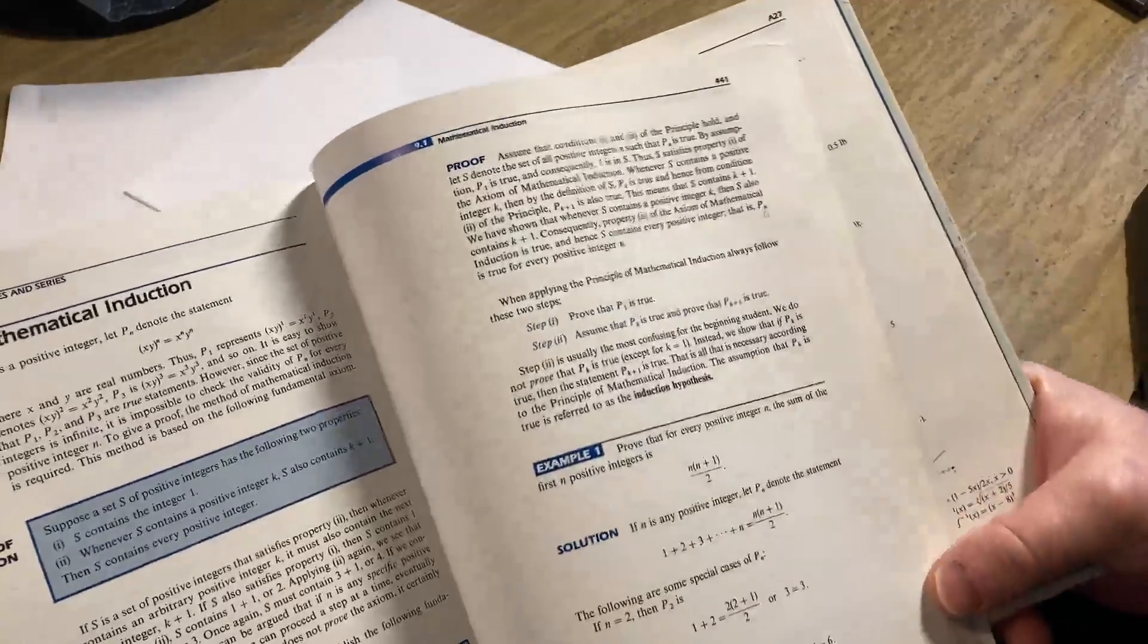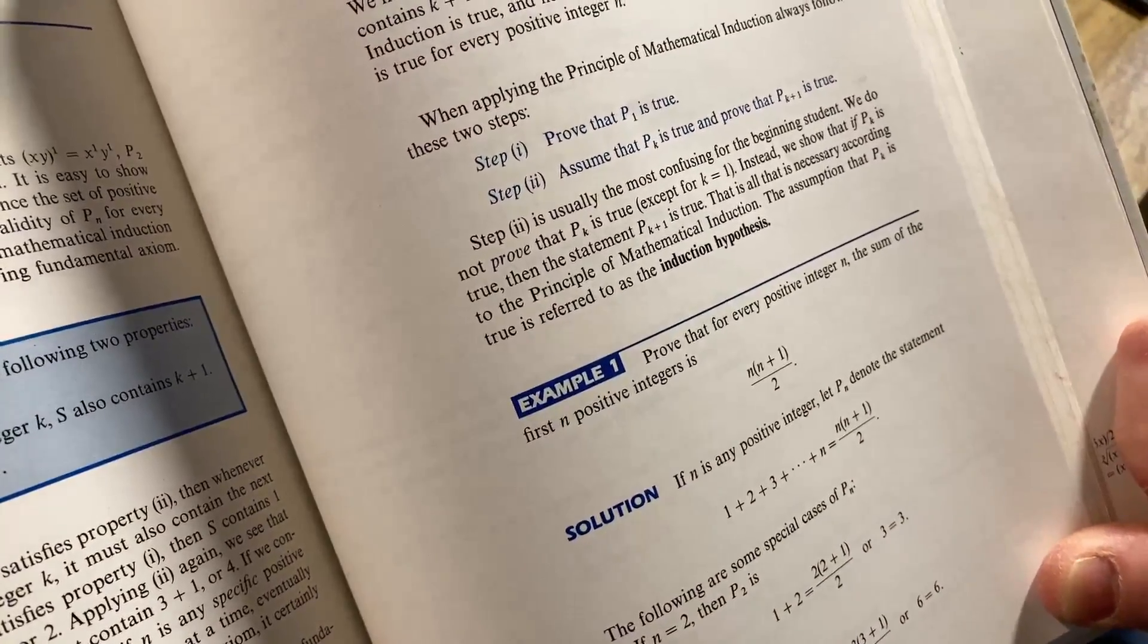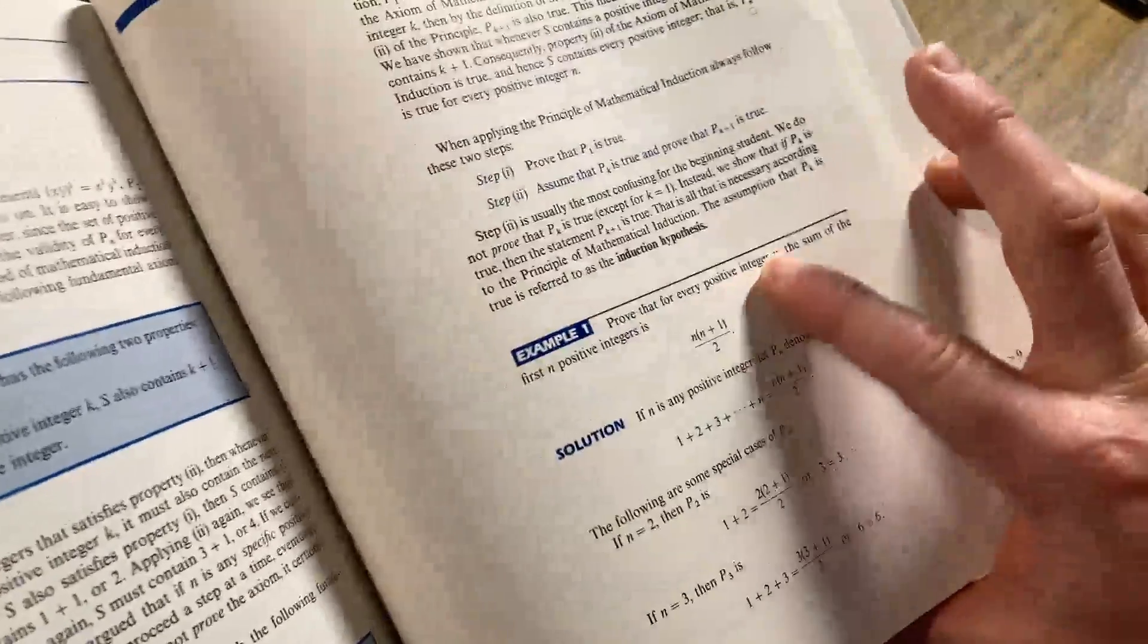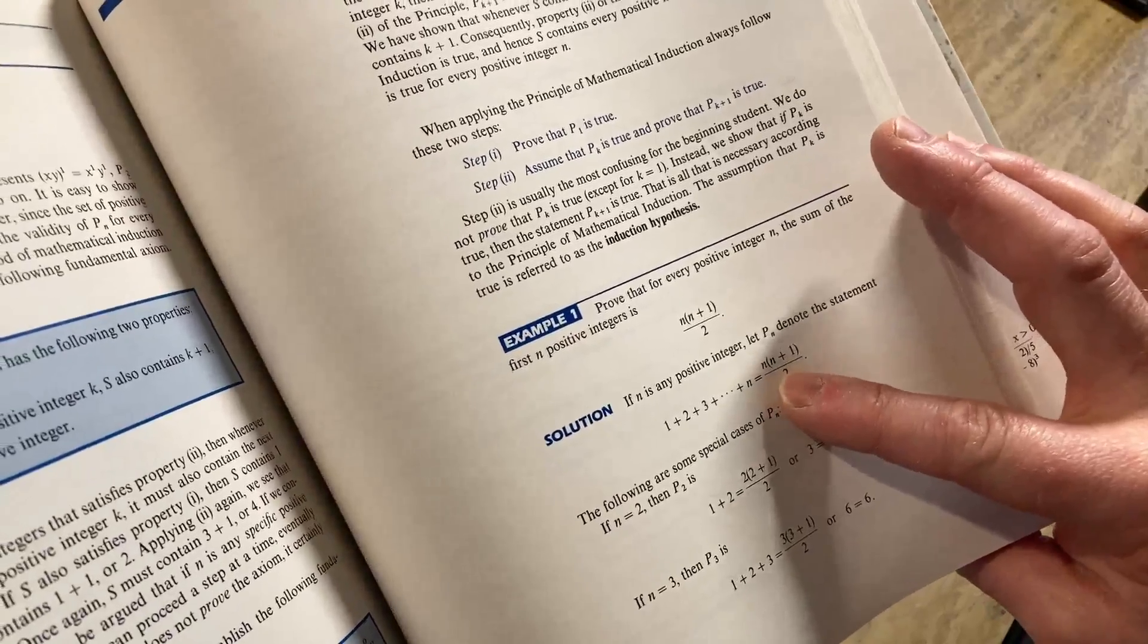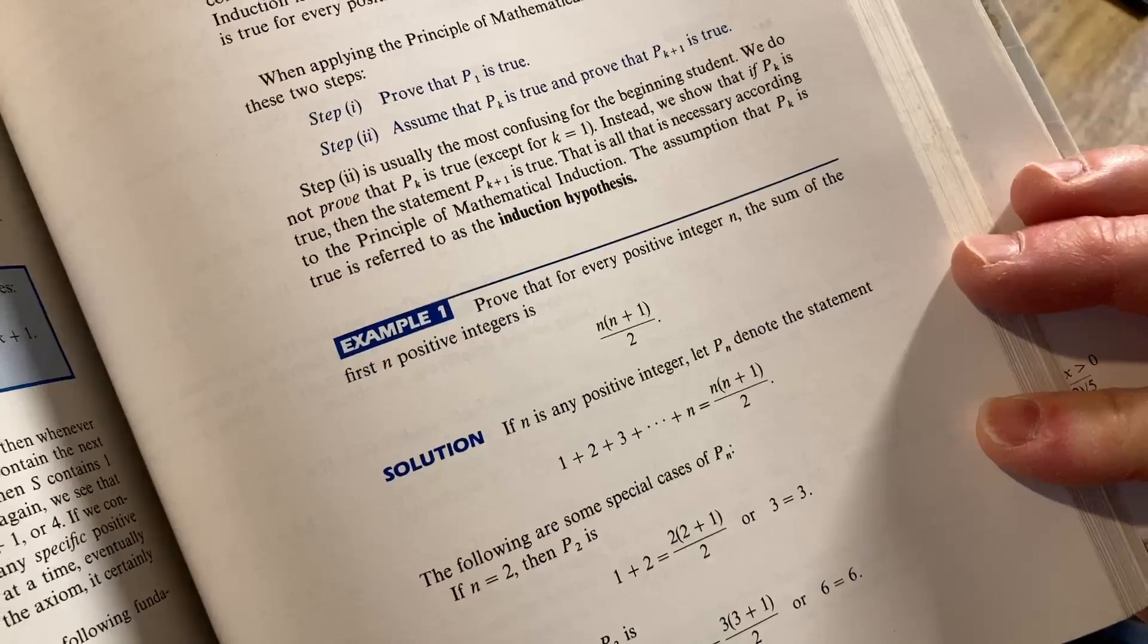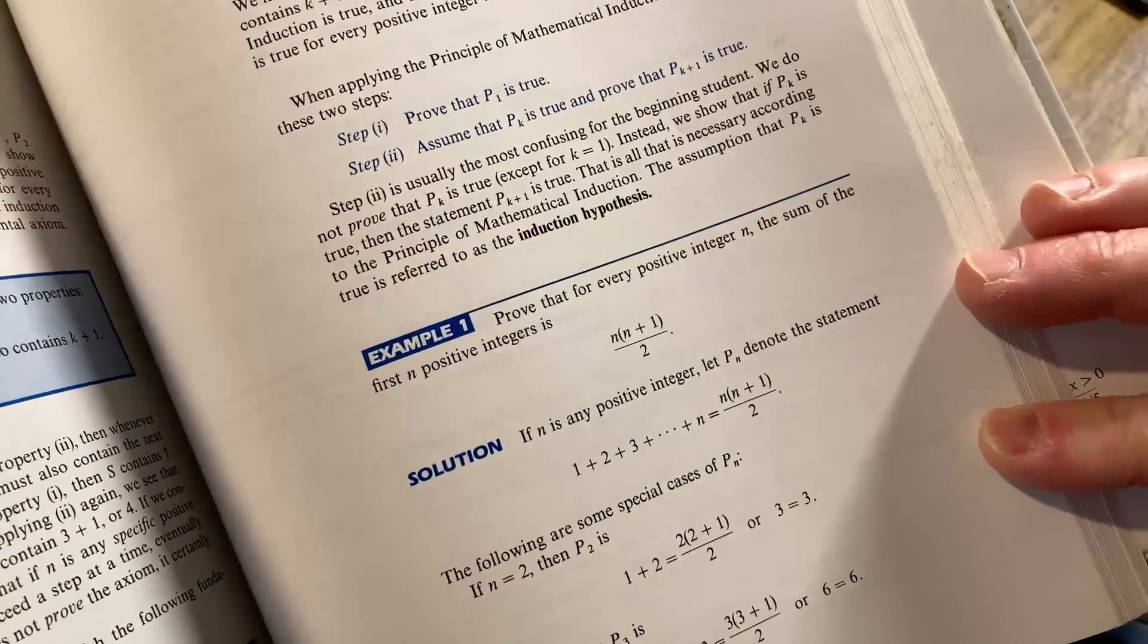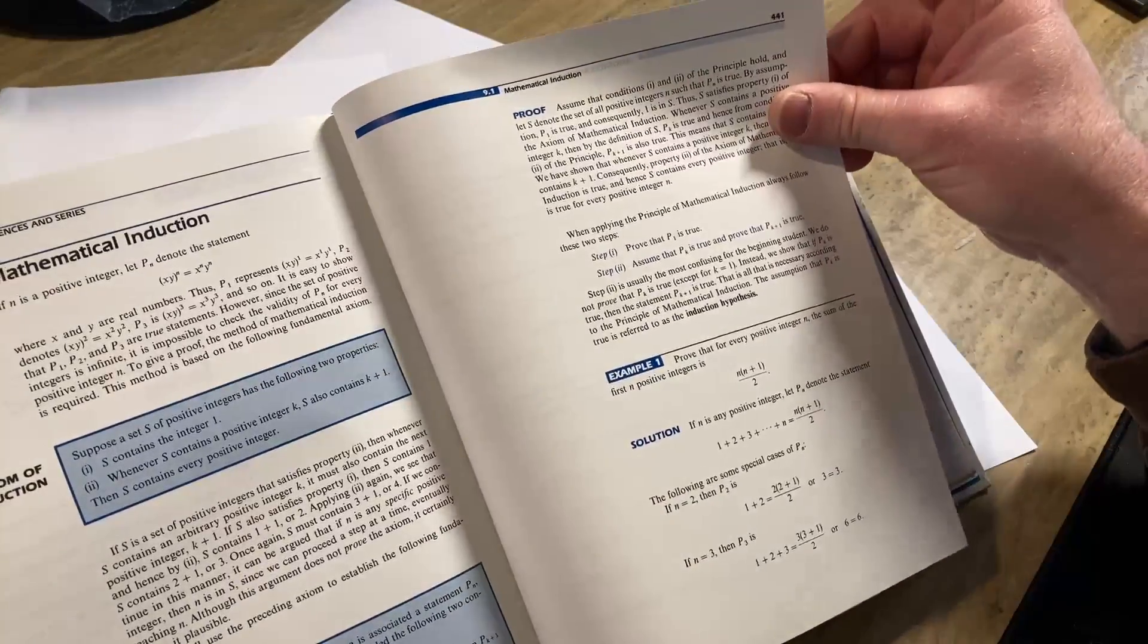And then here you have like your first induction proof. The sum of the first n positive integers is n times n plus 1 over 2. It's funny they wrote it in words like that. So here they have it down here. Okay, they write it as a statement. There's your statement P sub n. The first case is to prove, looks like they prove it when n is equal to 2. They start with two on the proof. You could just also start with one.